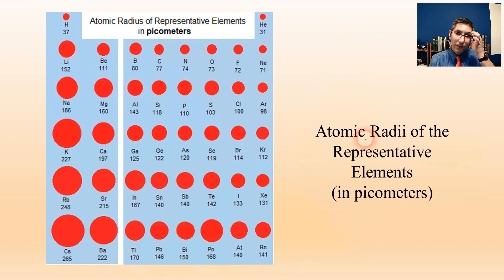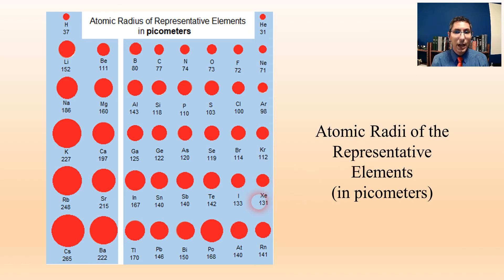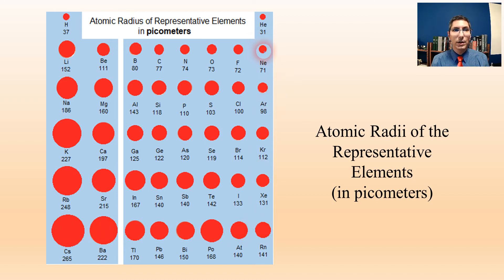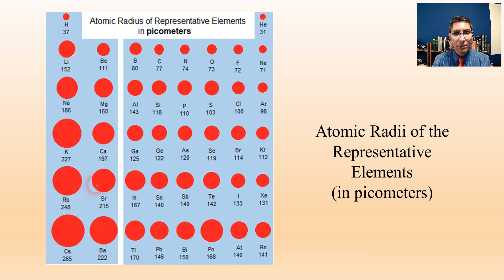Now let's take a look at this graphically. This is a graphical representation of the atomic radii of most of the representative elements, measured in picometers. As you can see, the trend is pretty much what we expected. With very few exceptions, the atoms on the left side and on the bottom of the periodic table are the largest. As we go toward the right and especially toward the top right, the atoms are much smaller. Going down means more occupied energy levels and greater electron distance from the valence electrons to the nucleus. Going to the right means greater effective nuclear charge — more protons to pull in those energy levels more tightly.